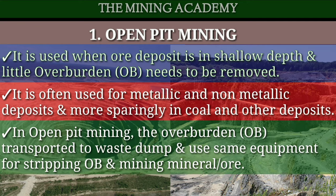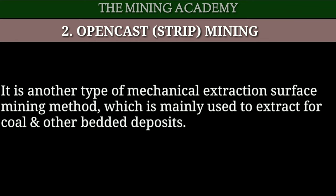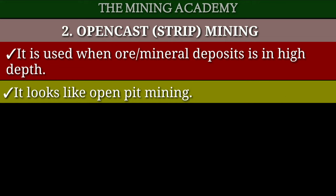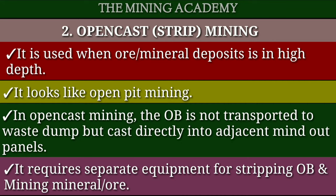Mechanical extraction method ki second method hai open cast mining, ise strip mining bhi kehte hain. Yah method mainly coal and other bedded deposits ke extraction ke liye use ki jaati hai. Is method ka use tab karte hain jab mineral ya ore deposit open pit mining ke comparison mein high depth par ho. Open cast mining same open pit mining jaisi hi dikhti hai — yah keh sakte hain ki yah open pit mining ka hi bada form hai. Open cast mining mein overburden ko base dump mein transport nahi karte, balki casting ke through pahle se bane mined-out panel mein bhar diya jaata hai. Open cast mining mein overburden hatane tatha mineral ya ore extract karne ke liye alag-alag equipment ki zaroorat hoti hai.